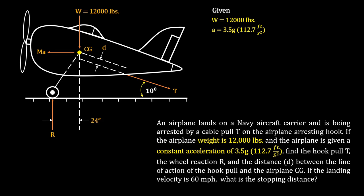How did we arrive at 112.7 feet per second squared? If we substitute our value for gravity into G, which is 32.174 feet per second squared in the imperial system, we should arrive at 112.7 feet per second squared. And finally, we have our landing velocity, which is 60 miles per hour.